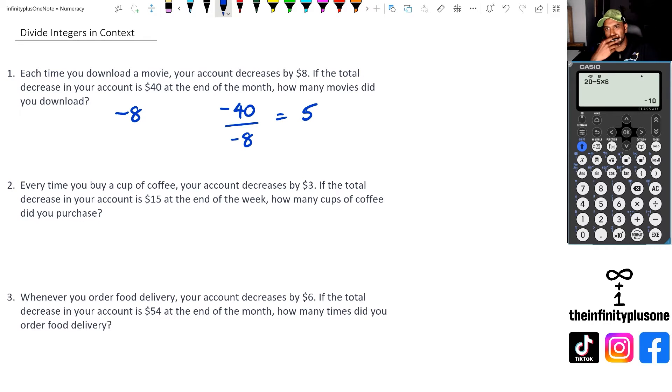Now you might be thinking, what's the difference between doing this and 40 over eight? Because if you think about it, your account shows that you spend 40 bucks and each of those movies cost eight dollars, then 40 divided by eight is equal to five. So either way you do it, you're still going to get the answer. Five movies.